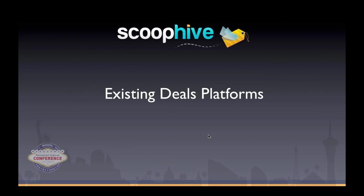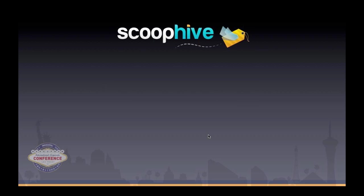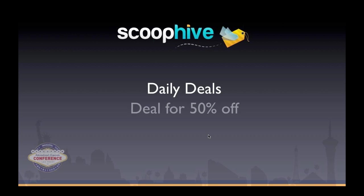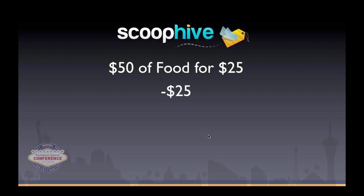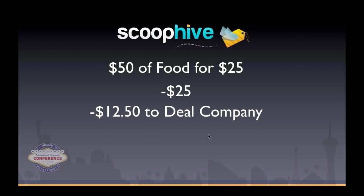Before we get too far ahead, let's talk about what's out there — what we're competing against. The first and probably biggest competitor is the daily deals platforms like Groupon and LivingSocial. They typically offer deals around 50% off. But let's break down where that cost goes: if a restaurant offers $50 worth of food for $25, they're out $25 for the discount. The remaining $25 is then split half to the deal company and half to the merchant — meaning the merchant is selling $50 worth of food for just $12.50.